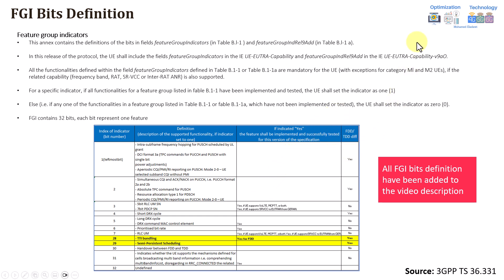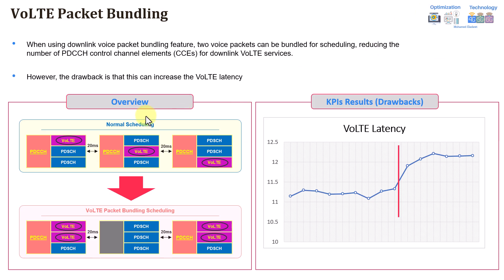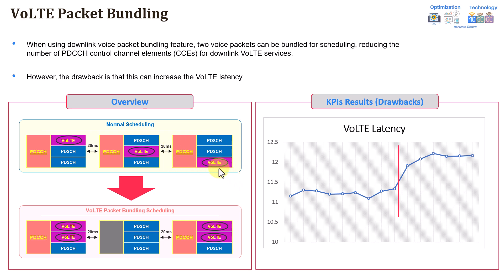Now let's move to the next feature we have today. The second feature is also a very good and easy-to-understand feature — it is called downlink voice packet bundling. From the name itself, it kind of gives some explanation about how this feature works. If you look into the normal scheduling again, which we explained in the previous slides, the allocation will be every 20 milliseconds and you will have your PDCCH resource blocks and MCS and so on, with PDCCH allocation and the related resource blocks for the MCS.